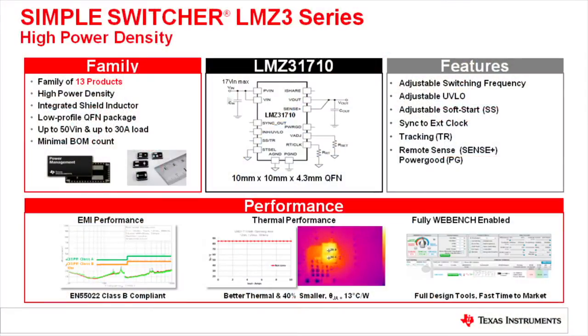The family can be powered from input voltages up to as high as 50 volts and output currents up to as high as 30 amps. The power modules include a controller, MOSFETs, shielded inductor, and passives all in an over-molded QFN package.